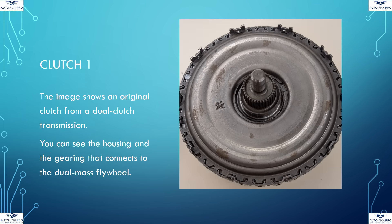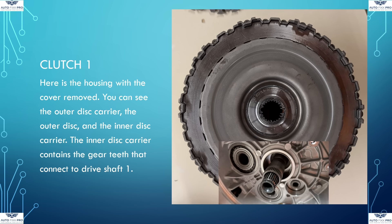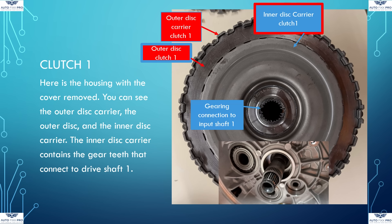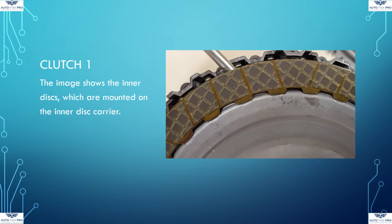Here you can see an original clutch from a dual-clutch transmission: the housing with cover and the gearing that connects to the dual-mass flywheel. There is usually a retaining ring on the cover, which has already been removed. Once the cover has been removed, the outer disc carrier of clutch 1 can be seen, housing the outer discs of clutch 1. The inner disc carrier of clutch 1 can also be seen, with the teeth that connect it to driveshaft 1. After removing the first outer disc, you can see an inner disc sitting on the inner disc carrier.